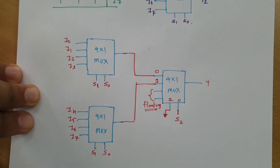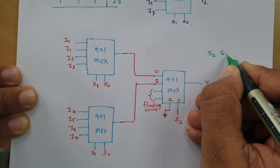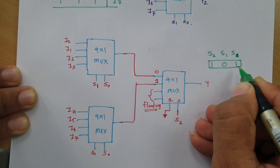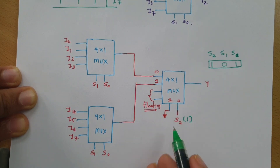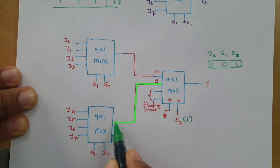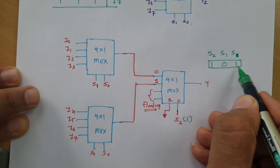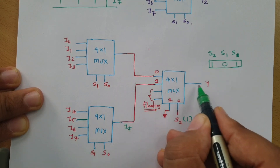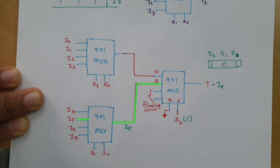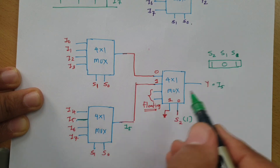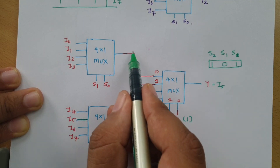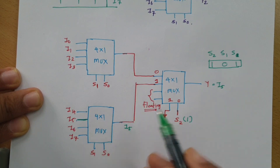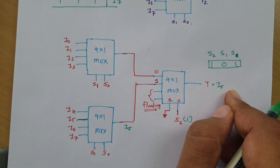For example, if S2, S1, S0 is 101 — S2 equals 1, so the second mux's terminal gets selected. S1 S0 is 01, which means I5 will get selected. I5 comes to the third mux and the output will be I5. Similarly, when S2 is 0, the first mux terminal gets selected. This is how the same functioning as an 8x1 MUX is achieved.